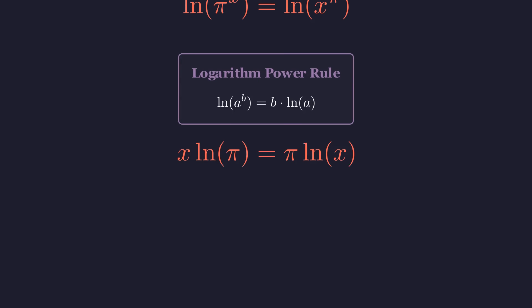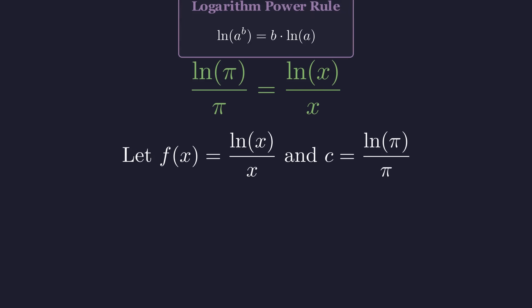Now, I want to rearrange things to see the structure more clearly. Let's divide both sides by pi times x to separate the x terms from the pi terms. And here's where things get really interesting. We now have a constant on the left side and a function of x on the right. The solutions to our original equation are exactly the values of x where this function equals this constant. Let me give these expressions names to make them easier to work with. I'll call the function on the right f of x and the constant on the left c. So our problem reduces to finding where f of x equals c.